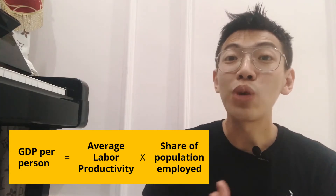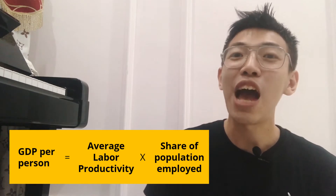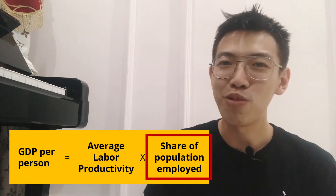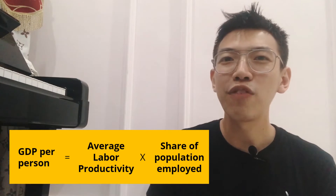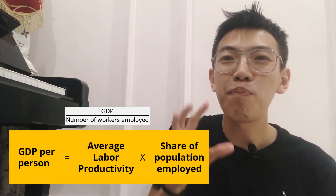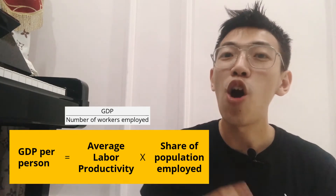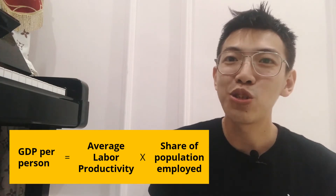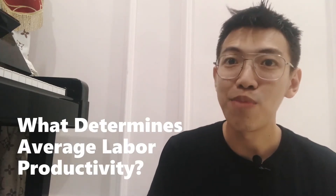GDP per person equals average labor productivity times share of population employed. So if a country wants to increase GDP per person, it needs to increase average labor productivity and also increase the share of population employed. Average labor productivity is the GDP divided by the number of population employed, and share of population employed equals number of workers divided by total population.